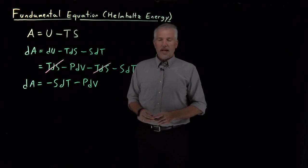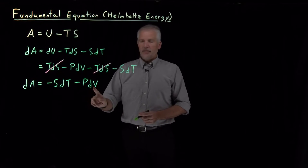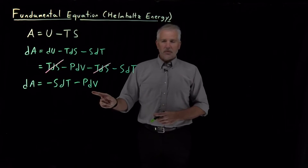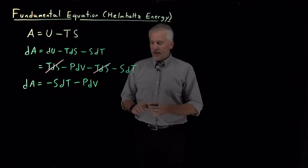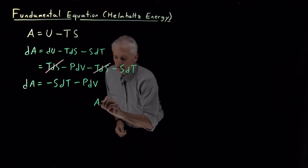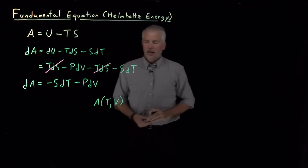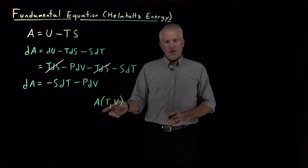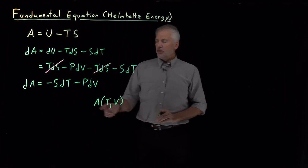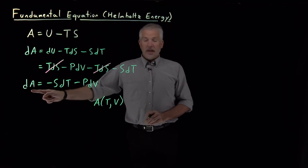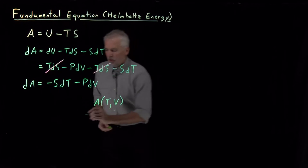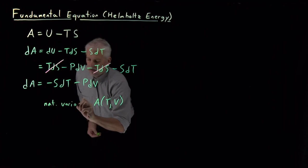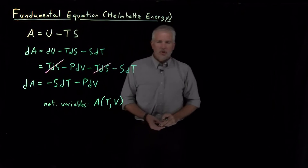One, it tells us that the natural variables of the Helmholtz energy are T and V because this dA has this nice clean and simple form when expressed as a function of dT and dV. What that means is that if we think of A as a function of T and V, this expression is simple. If we were to think of A as a function of T and p or S and p or S and T or some other combination of variables, we could obtain a differential but it wouldn't be quite as simple. So natural variables for Helmholtz energy are temperature and volume.